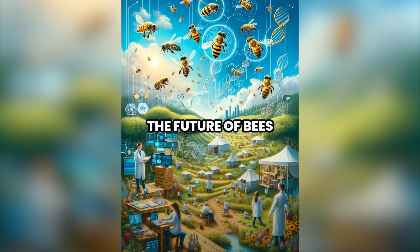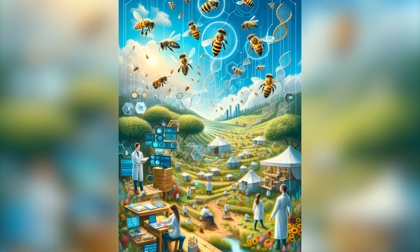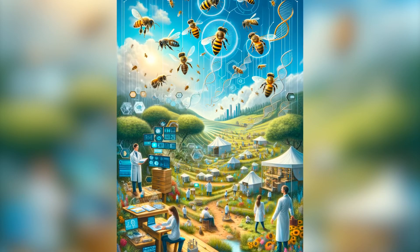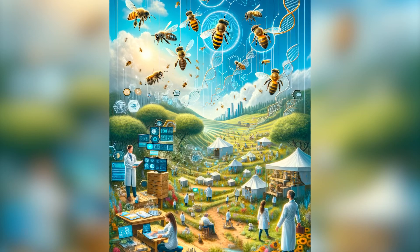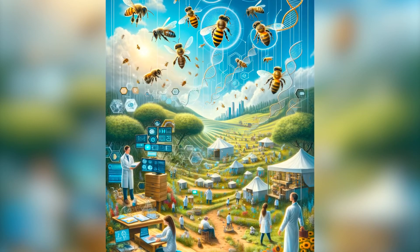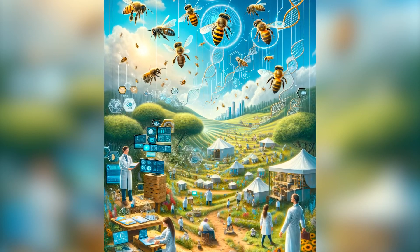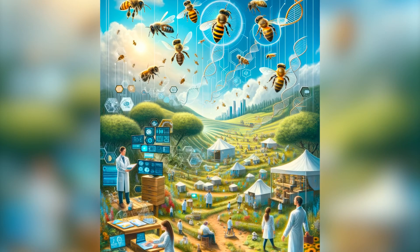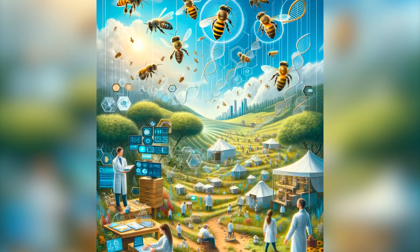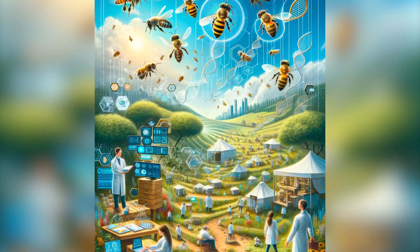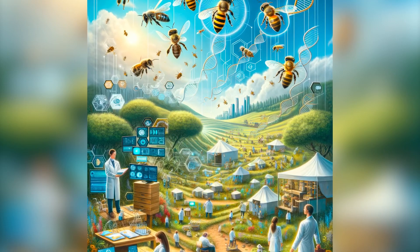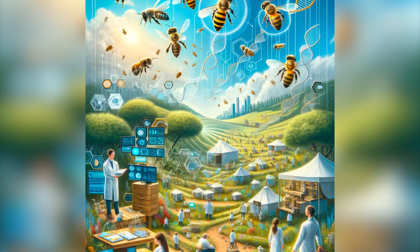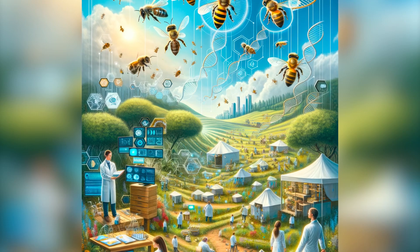Chapter 10: The Future of Bees. Looking towards the future, the prospects for bees and their role in our ecosystems and agriculture largely depend on the actions we take today. This chapter reflects on innovations in bee research, technology applied to beekeeping, and social movements focused on their protection, outlining a path towards a future where bees continue to thrive.